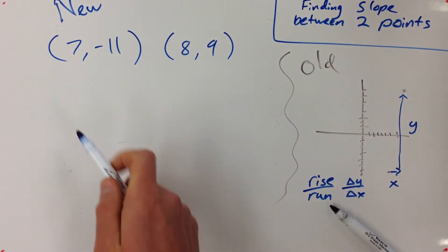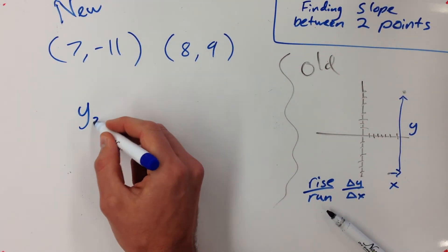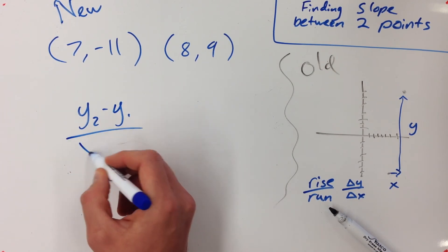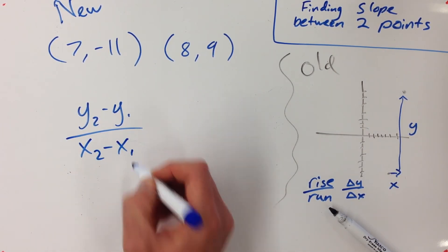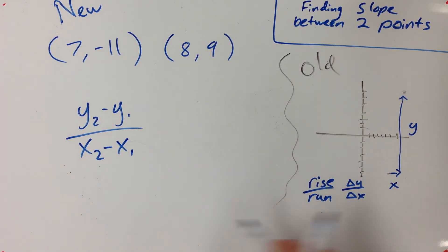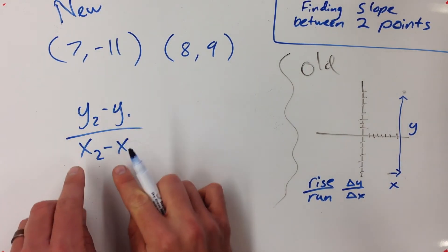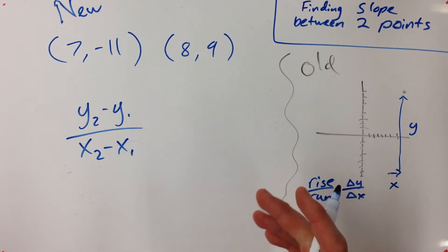Here's the formula. And it gets a little bit, I don't know, it looks scarier than what it actually is. It's y2 minus y1 over x2 minus x1. And this whole y2 and y1, just think about it as I'm going to subtract the y's, I'm going to subtract the x's. That's all you have to think.